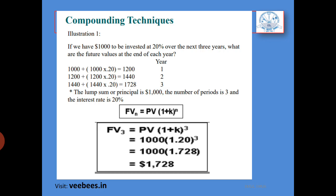The formula is: FV = PV × (1 + k)^n, where k is the interest rate and n is the time period. For example, FV = PV × (1 + k)^3. If PV = 1,000 and k = 0.20, then 1,000 × (1.2)^3 = 1,728. This is how we compound.